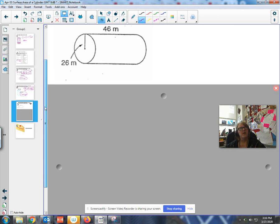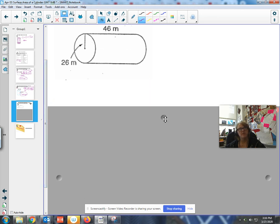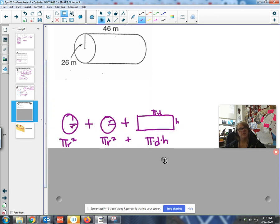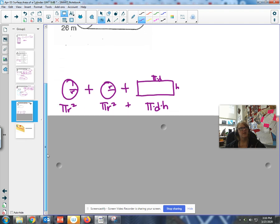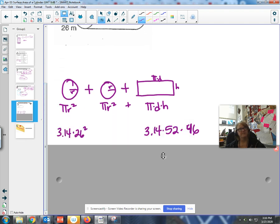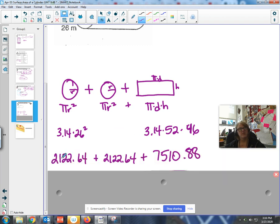All right. Here's the grand moment or the grand reveal. So first things first, circle, circle, rectangle, top, bottom, and all the sides. So radius is 26. That's kind of big. 2,122.64 for each of those circles. Pi times diameter. Diameter is going to be 52.